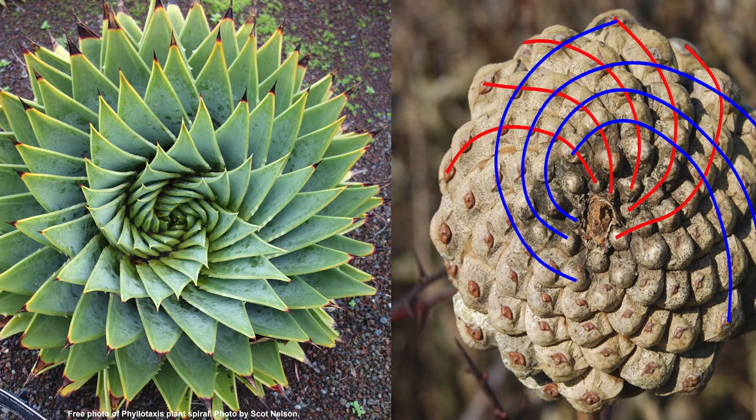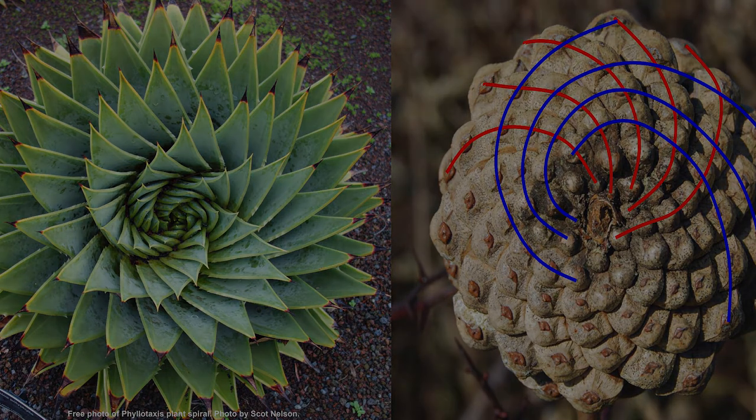Therefore, plant morphogenesis leading to the appearance of patterns of spiral phyllotaxis is the subject of close attention of all researchers of Fibonacci numbers.